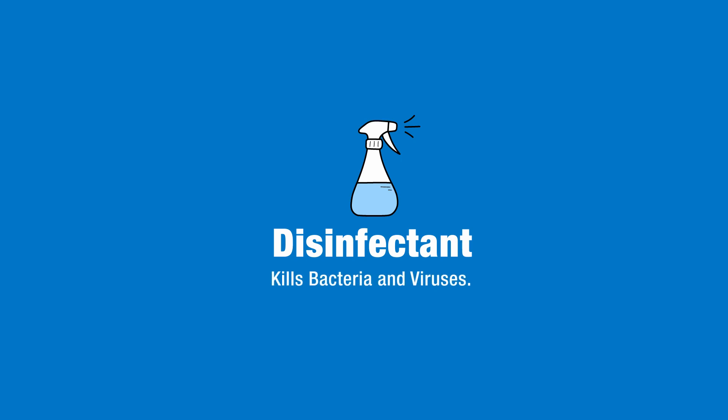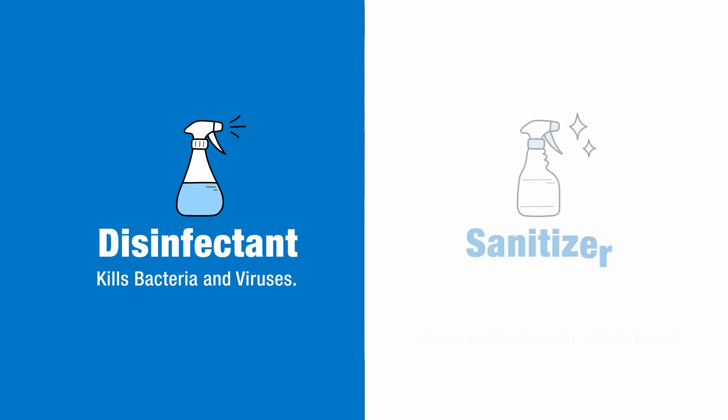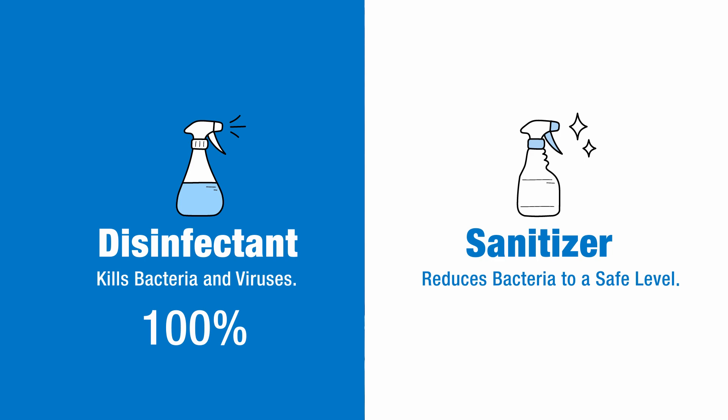A disinfectant is an agent that destroys or irreversibly inactivates bacteria and viruses, whereas a sanitizer is an agent that reduces the amount of bacteria to a safe level but does not necessarily eliminate all of the bacteria. To put that into numbers, a disinfectant kills 100% of bacteria and viruses on a given surface when used properly, while a sanitizer removes as much as 99.9% of bacteria when used according to the manufacturer's directions.